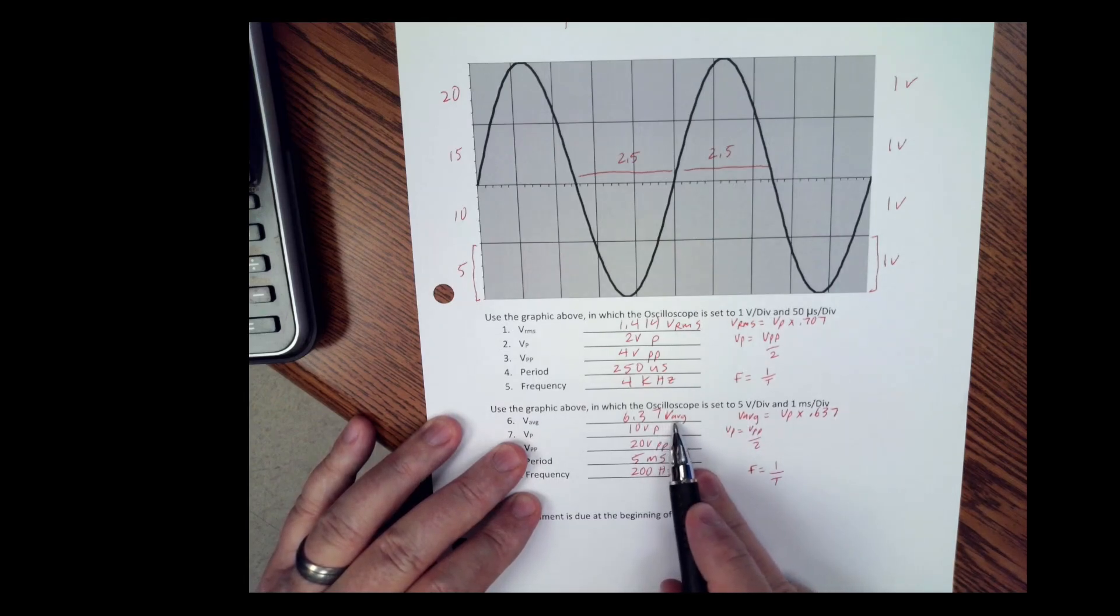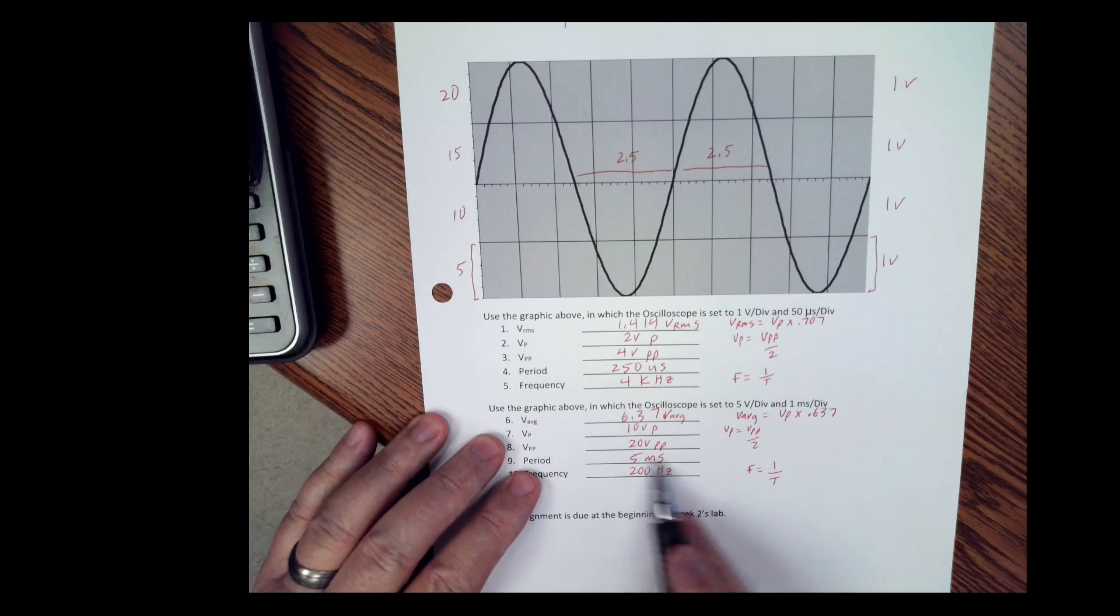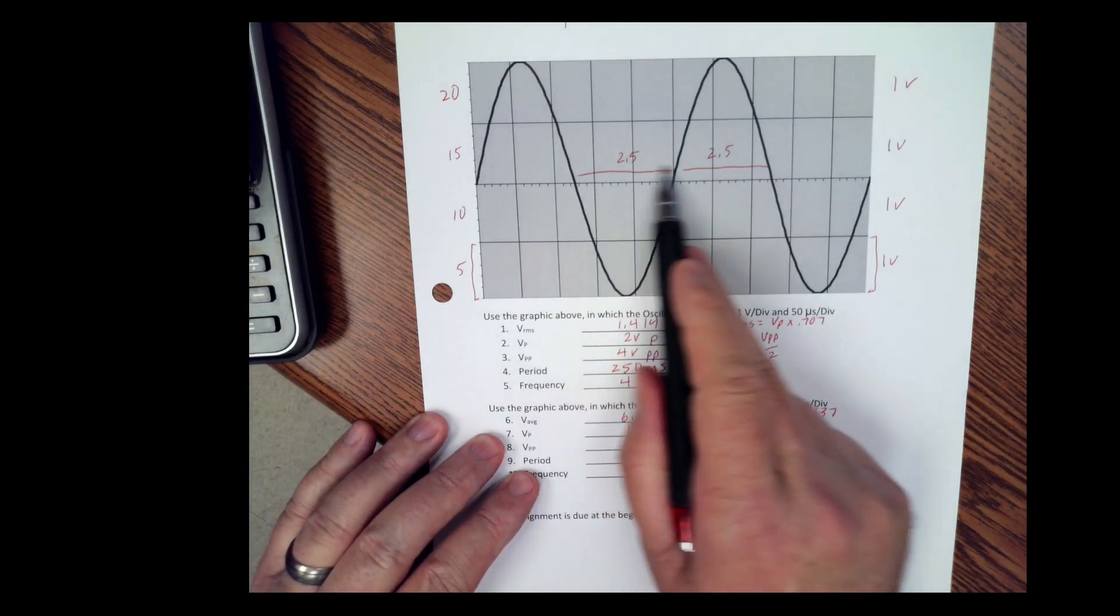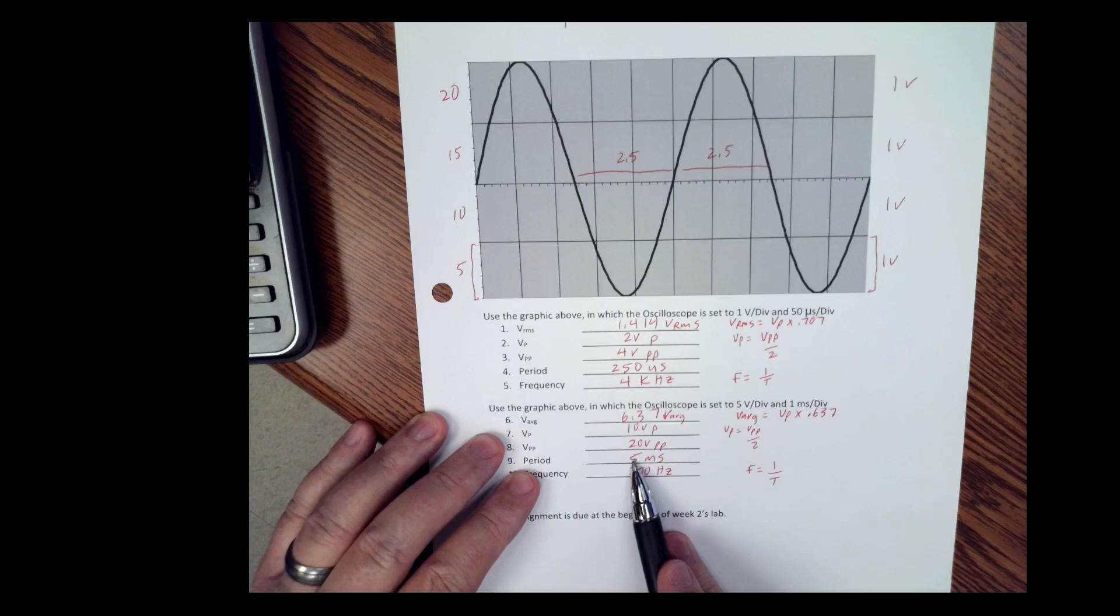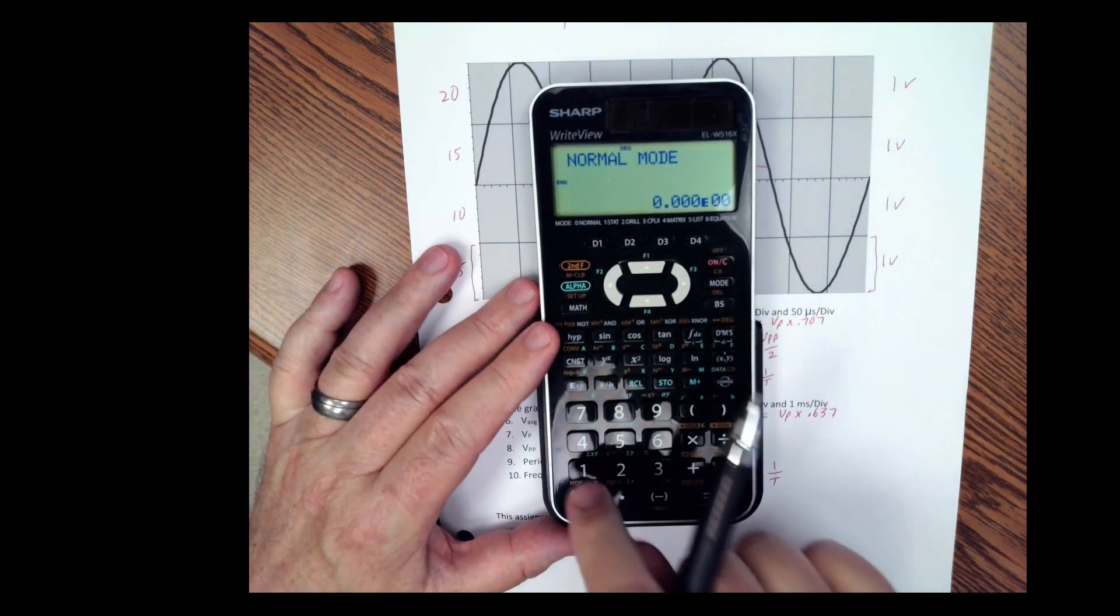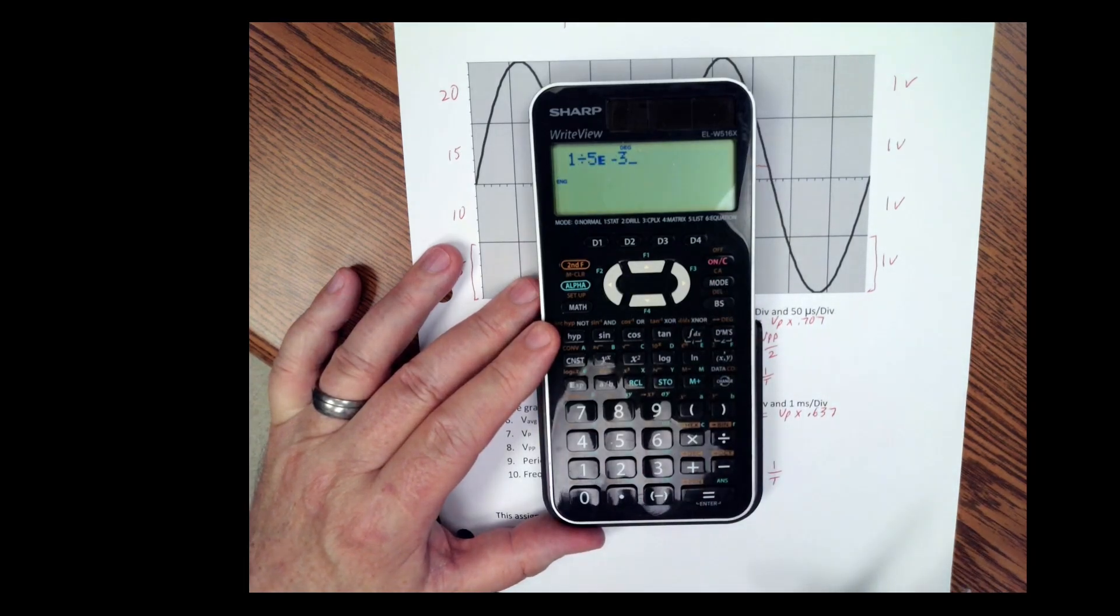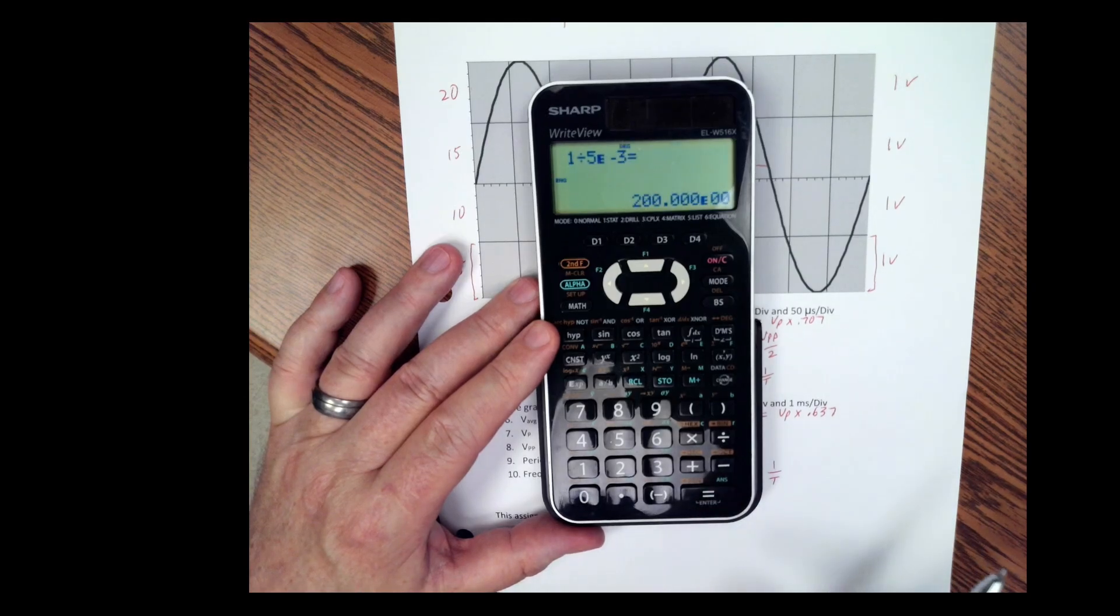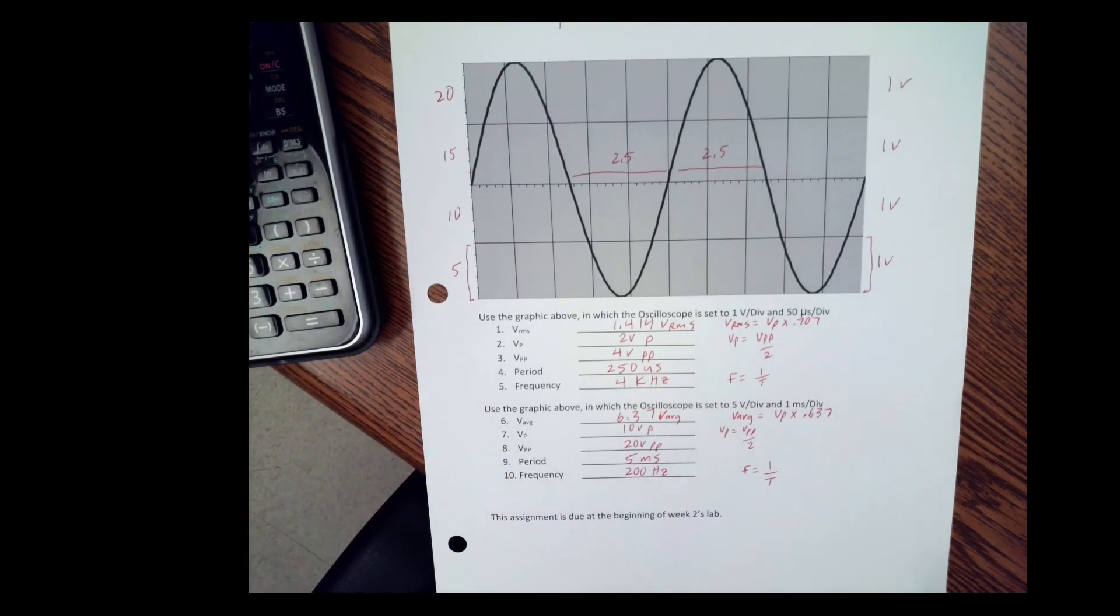Okay, then the period - again it's still five divisions, but now we're at one millisecond per division. So it's five times one millisecond is five milliseconds. And then one over that - one divided by five milliseconds is E to the negative three, and you come up with 200 hertz.